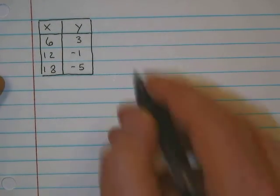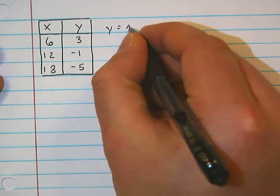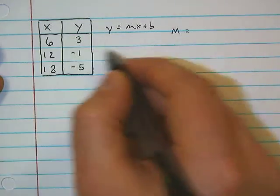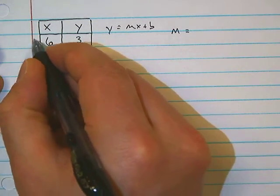Now for a table. Same concept. First thing, we're looking for y equals mx plus b. First thing we calculate is the slope.